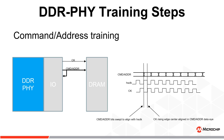In command address (CA) training, the CA bits are aligned to CK. The DDR PHY sweeps the delays on the CA bits until each bit transition is aligned to the high-speed clock. Once alignment is achieved, CK, which is driven from the high-speed clock, is phase shifted 90 degrees so its edges are center aligned with the CA data valid window.